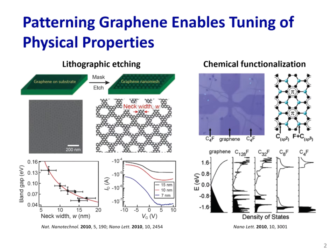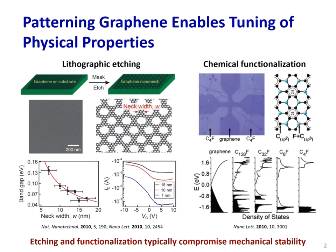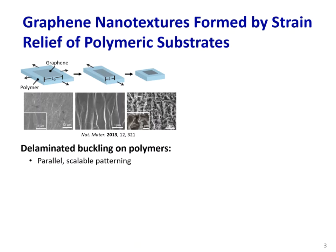Another well-established method is to chemically functionalize the surface of graphene. For example, upon a fluorine-containing plasma treatment, bonds are formed between fluorine and carbon atoms, and the bond formation changes charge densities and introduces a band gap that widens with fluorine coverage. However, both of these methods typically damage the graphene lattice and compromise the mechanical stiffness.